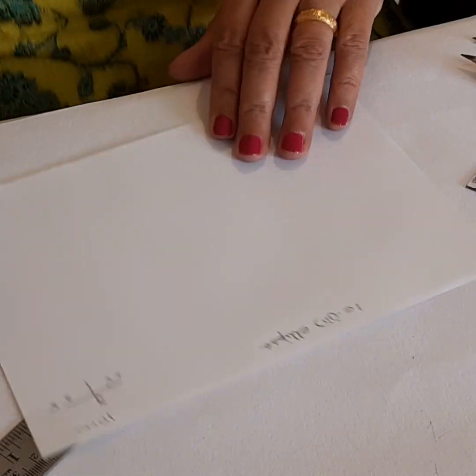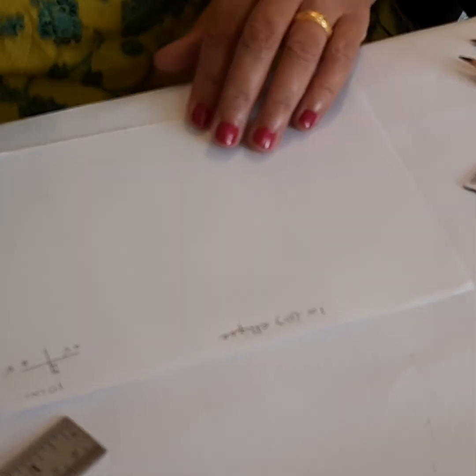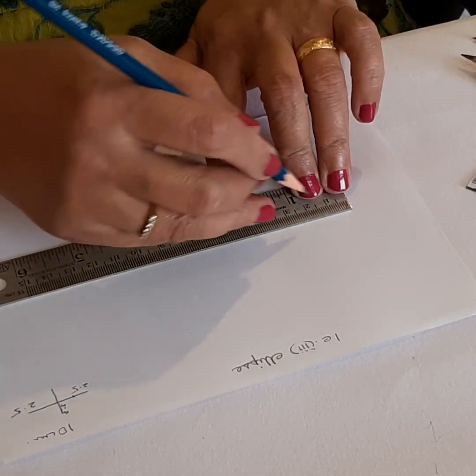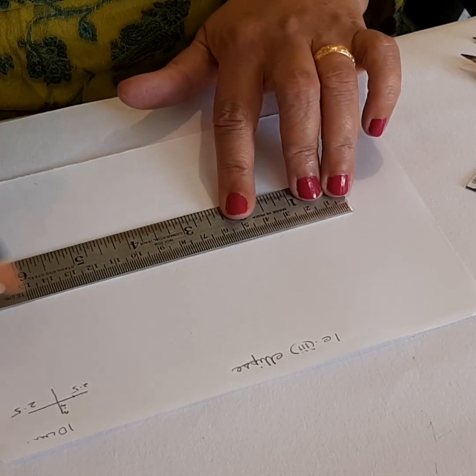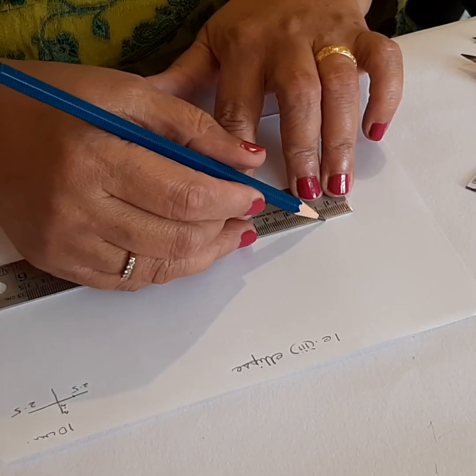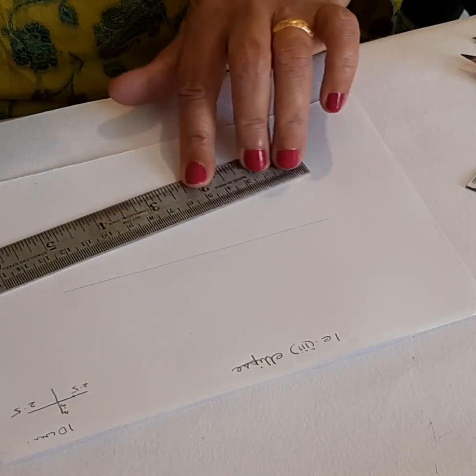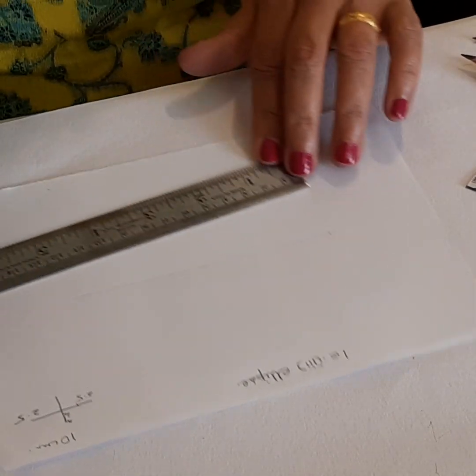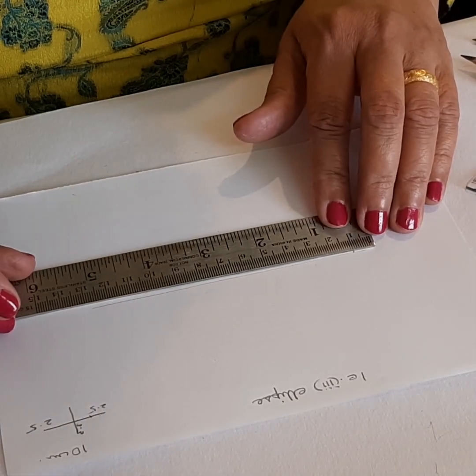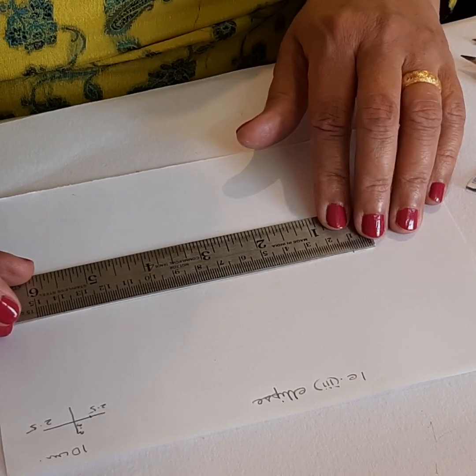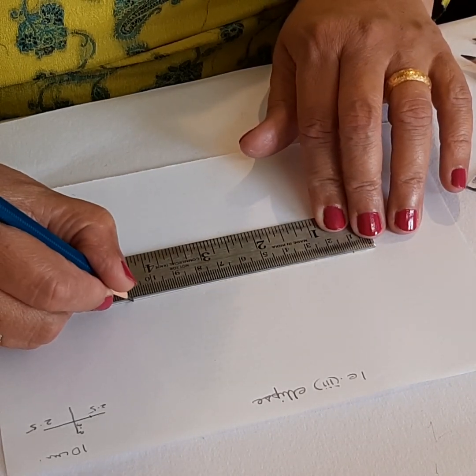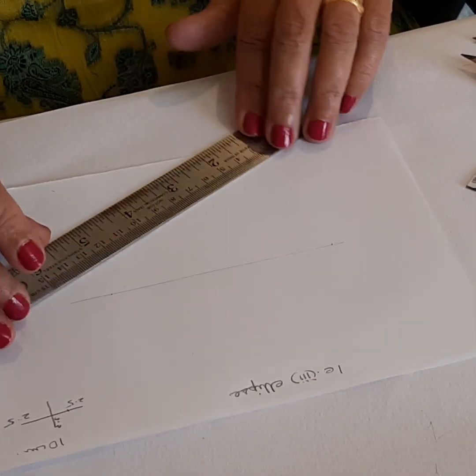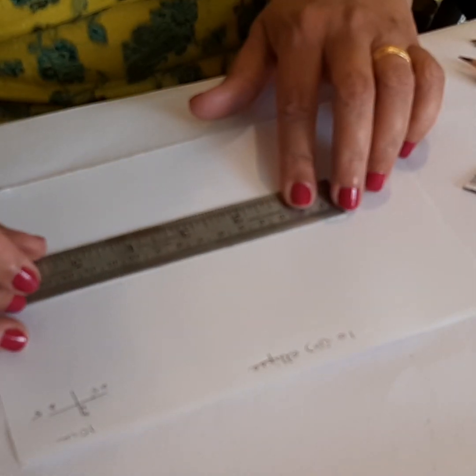Now let's come to ellipse. Ellipse is very similar to oval, but both the ends are the same. You don't have a pointed end like you have in the oval. Make a straight line. We want a 10 cm ellipse also, so let's mark 10 cm here first. So this is 10 cm. Now on either side I will mark 2.5 cm.